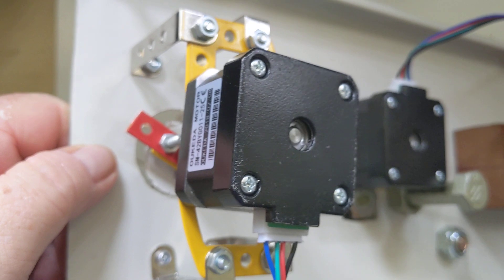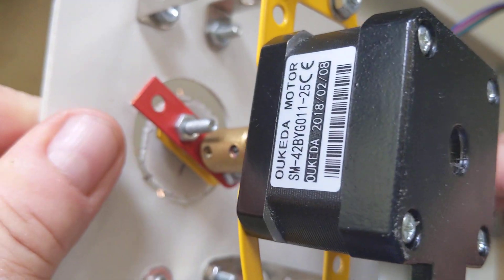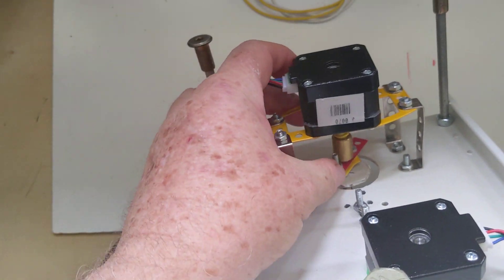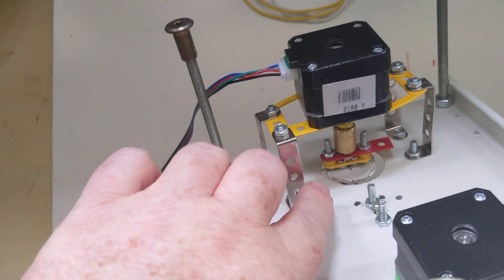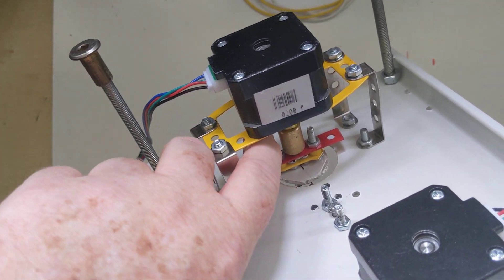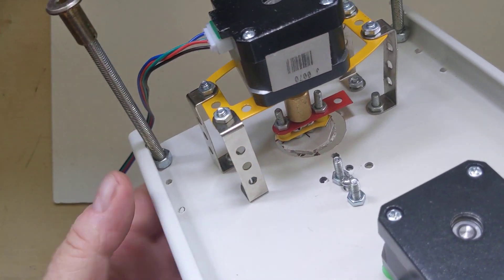And then we have this stepper motor which has got a really terrible Meccano setup. You can see this is a jury-rigged chuck with a bit of Meccano magic to come out with two pins.